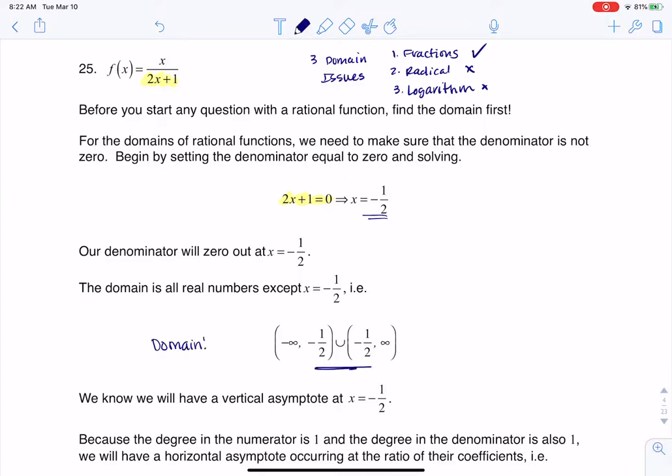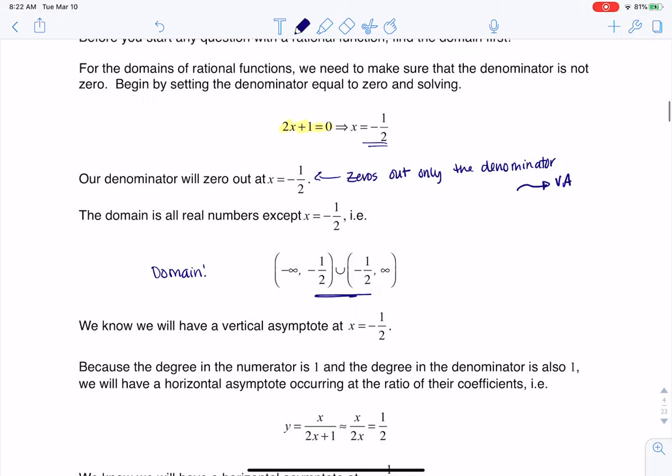And that's why you see me throwing it out there. Another thing to keep in mind is because negative 1 half zeroes out only the denominator, that means that we're going to have a vertical asymptote there. And that's why you see me making that little note here. We have a vertical asymptote.